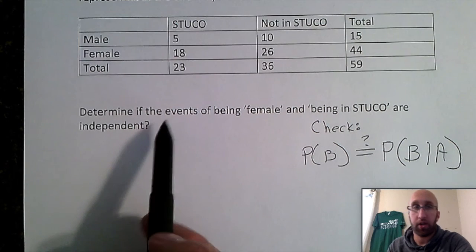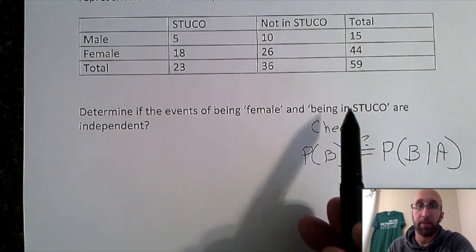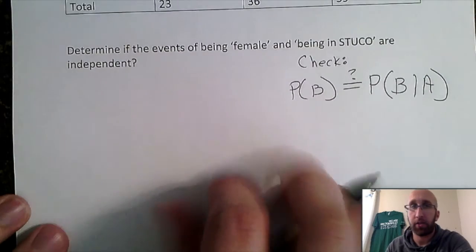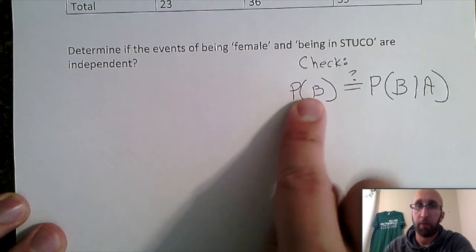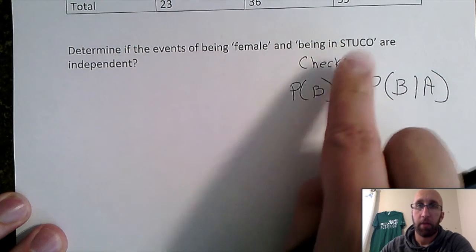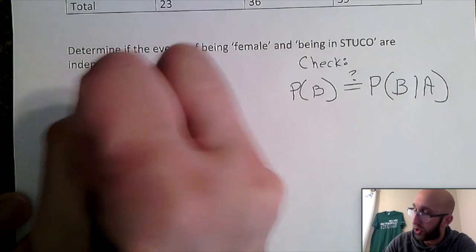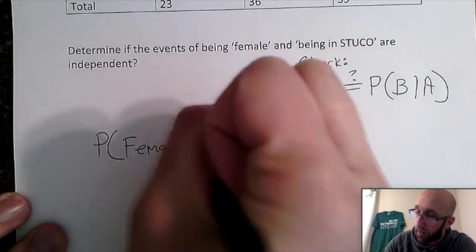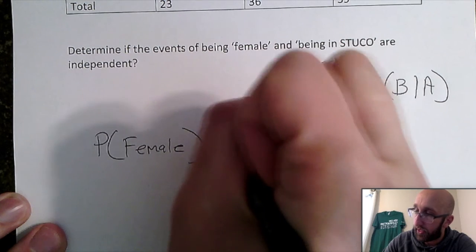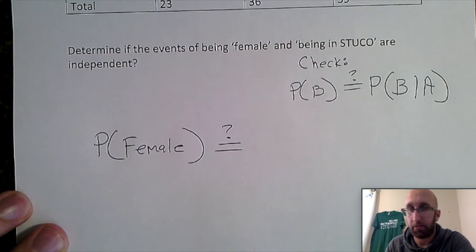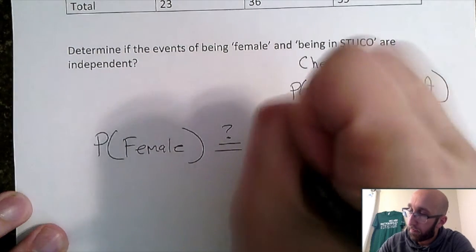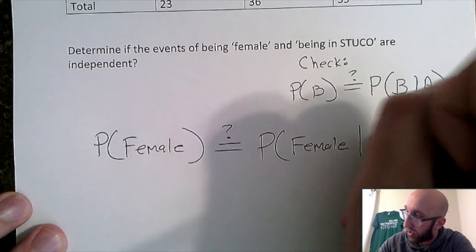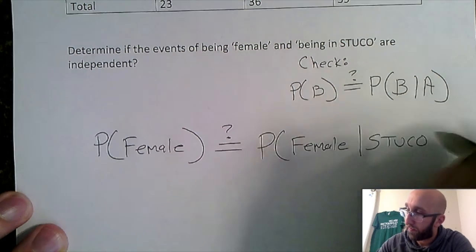So we need to determine if the events of being female and being in STUCO are independent. So I'm just going to plug in based on the order. I'll put female in for my B's and I'll plug STUCO in for my A. So we're checking: is the probability of being a female equal to—and I just represent that with an equal sign with a question mark—probability of female given they are in STUCO.